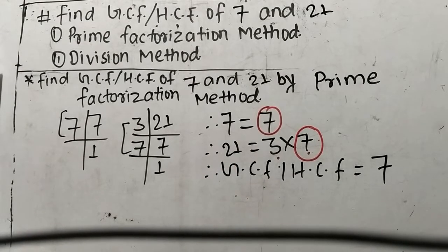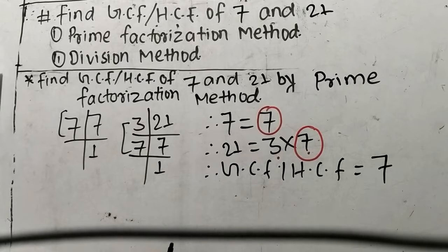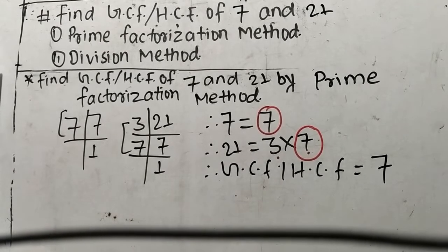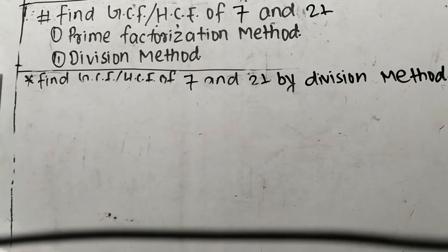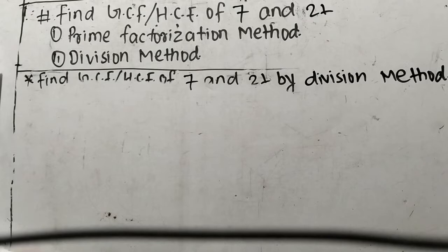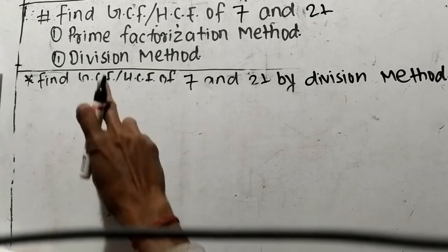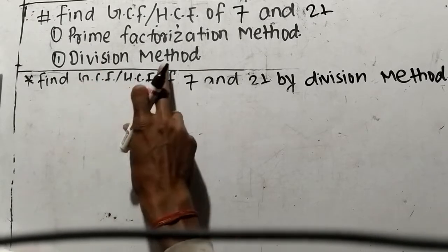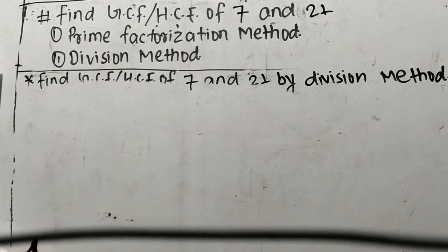In this way we can find out GCF or HCF by prime factorization method. Now our second method is by division method.